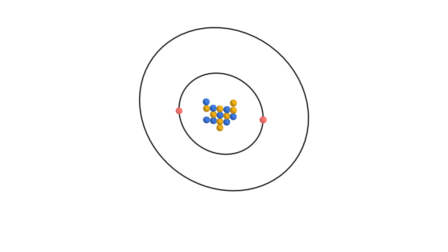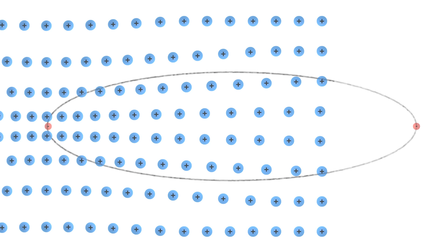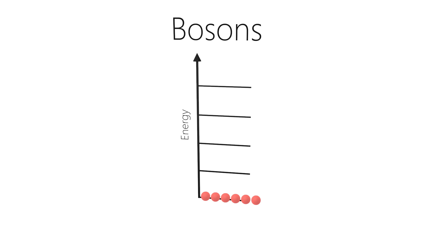But bosons can be in the same state and that's important for superconductivity. Because when two electrons go into a Cooper pair they are still fermions but they act together as a boson. That means all the Cooper pairs clump into the lowest energy level and they will all be in the same state because they are bosons now and not fermions anymore. Now they can behave as one big group of particles in the same state.